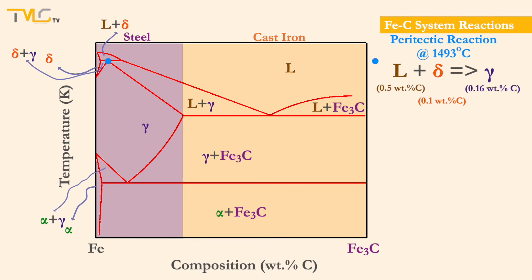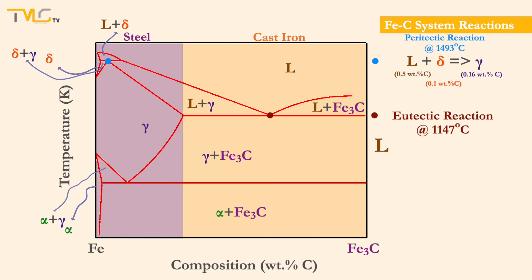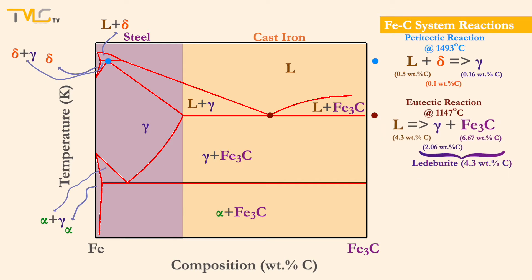The second reaction is the eutectic reaction taking place at around 1147 degrees Celsius, where the liquid phase having 4.3 weight percent carbon dissociates into a mixture of gamma phase having 2.06 weight percent carbon and a cementite phase having 6.67 weight percent carbon. This mixture of austenite and cementite phase is called ledeborite, which overall has 4.3 weight percent carbon. As we proceed beyond 2.06 weight percent carbon loading, we enter the cast iron region of the iron-carbon phase diagram.